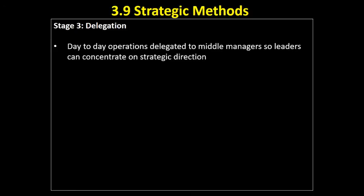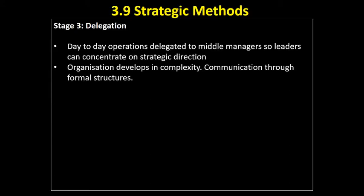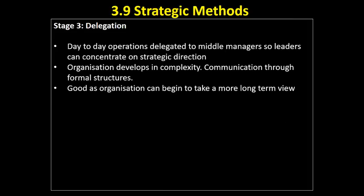The leaders are going to be concentrating on the strategic direction of the business, thinking one, three, five years ahead. The organisation is developing in complexity — we're communicating down through the structure. We've got formal structures for communication: regular meetings, email threads that run through the different departments. This is good because the organisation can begin to take a bit more of a long-term, strategic view.